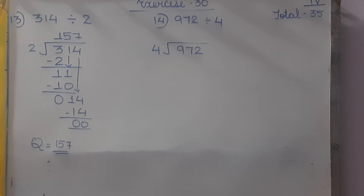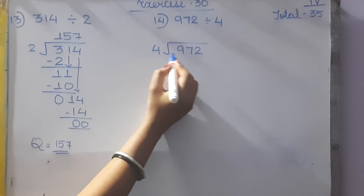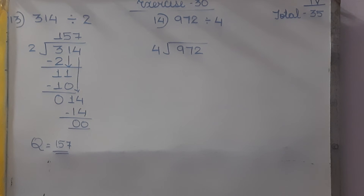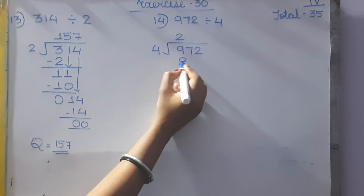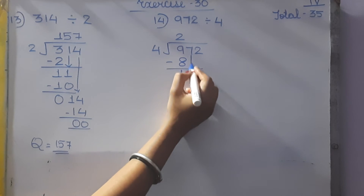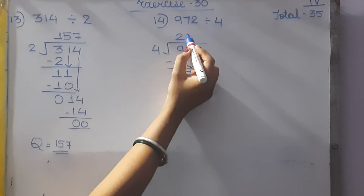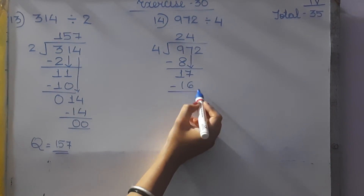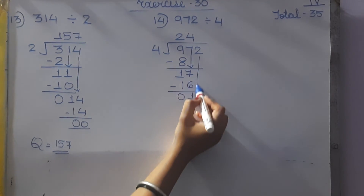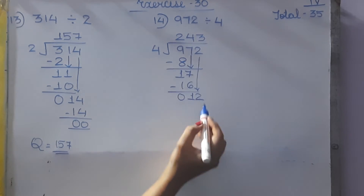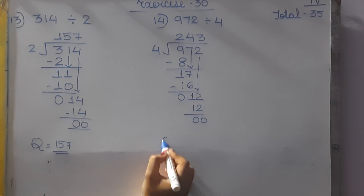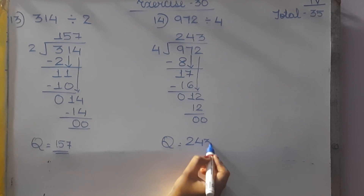Next: 972 divided by 4. In the table of 4, does 9 come? 4 ones are 4, 4 twos are 8, 4 threes are 12 — 12 is bigger than 9. So we take 4 twos are 8. So 9 minus 8 is 1. Bring down 7. Less than 17: 4 fours are 16. So 17 minus 16 is 1. Bring down 2. 4 threes are 12. So the quotient is 243.